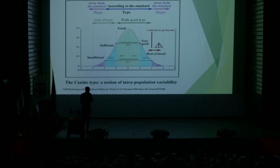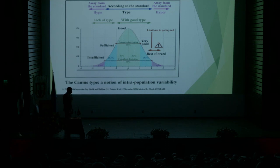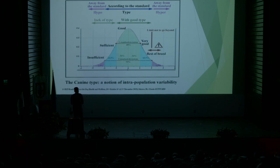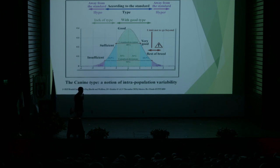I will take a small example to express what I want to say here. For example, in brachycephalic dogs, if we study three different breeds — I will take the Dogue de Bordeaux, I will take the French Bulldog, and I will take the Pug — you will understand the difficulty to know exactly this limit. If we consider the craniofacial ratio, it means the ratio between the face of the animal and the cranium.